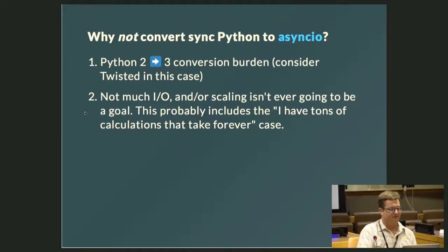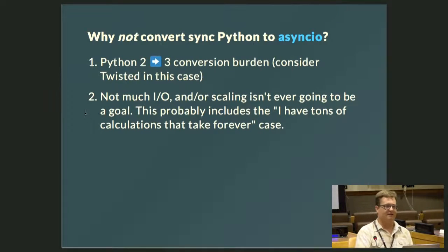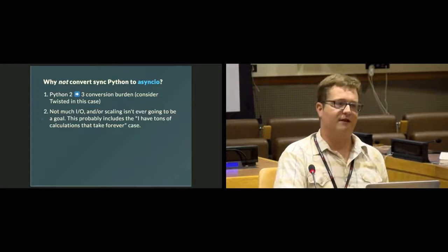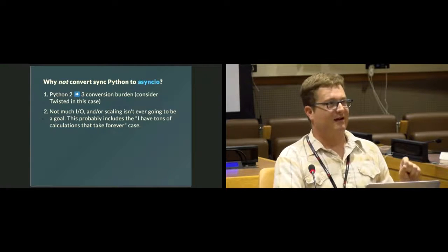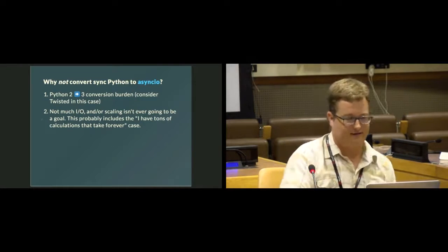Some reasons you shouldn't do it: if the Python 2 to 3 conversion is too burdensome, in which case you should check out Twisted and understand you'll have to rewrite your code if you ever convert. Or if you don't have any I/O, or scaling isn't really a goal. This includes the case of having tons of calculations that take forever — async is not going to make those go fast. What this does is allow you to execute code while sockets are taking time, but it will not make slow things go fast.